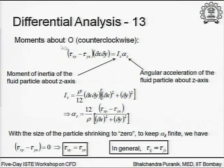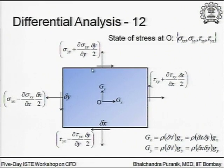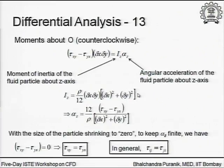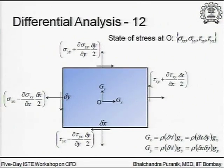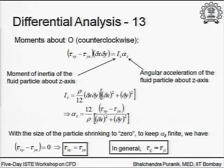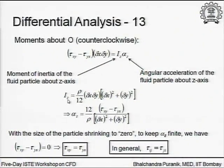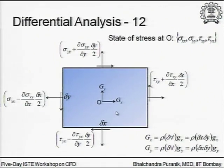The net anticlockwise couple about point O comes out in the form of (tau_xy minus tau_yx) times the volume element delta x delta y. By Newton's second law for rotation, this net moment equals the moment of inertia about the z-axis times the angular acceleration. From calculus, the moment of inertia for rectangular elements is given by a known expression.